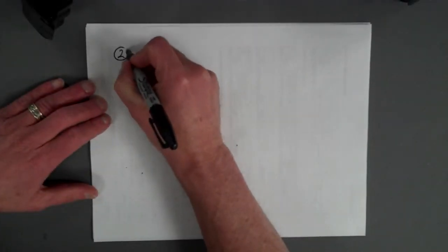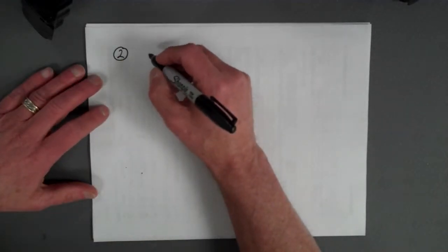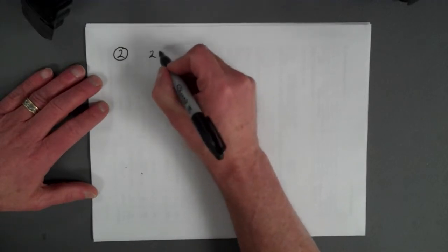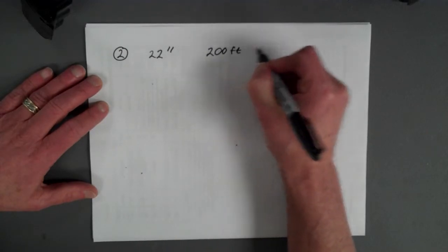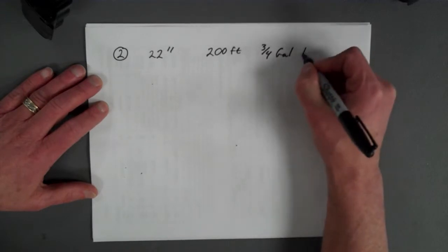Question number two. To calibrate your backpack sprayer, you measure the swath of the nozzle pattern at 22 inches and after walking 200 feet, you used three quarters of a gallon of water. What is your application rate in gallons per acre?